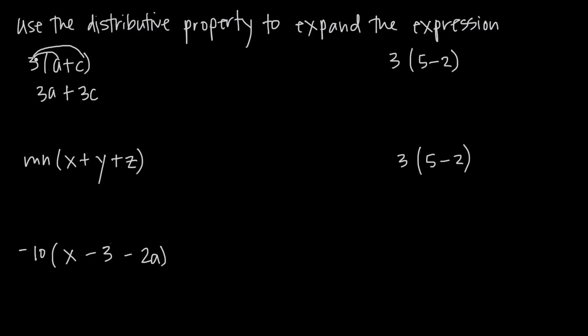It doesn't matter what we have outside of the parentheses or inside the parentheses. We're always taking what's just outside and multiplying it by each of the values inside the parentheses. So in another example here, we're going to multiply what's in front, mn, by everything inside here.